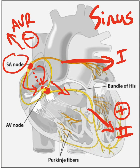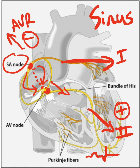So the P wave is going to be negative in AVR. To show you clearly how it looks on EKG: a positive P wave will appear like this, followed by the QRS. In AVR, a sinus rhythm will have a negative P wave followed by the QRS.